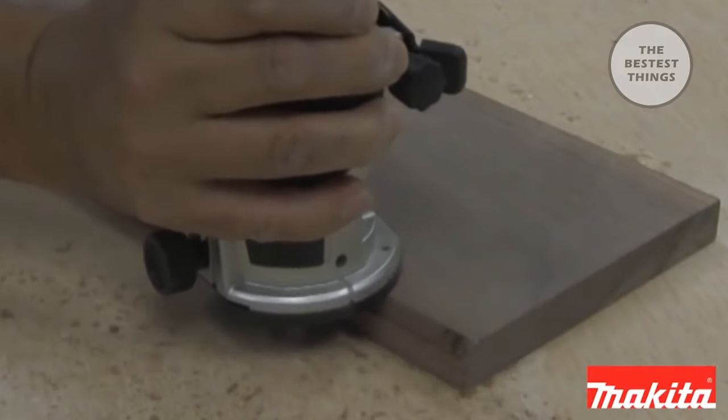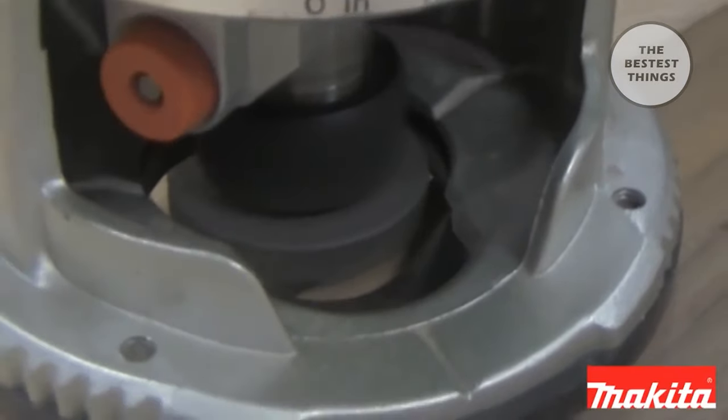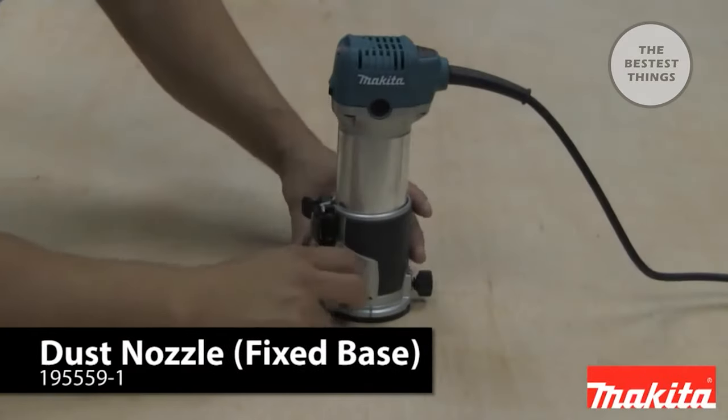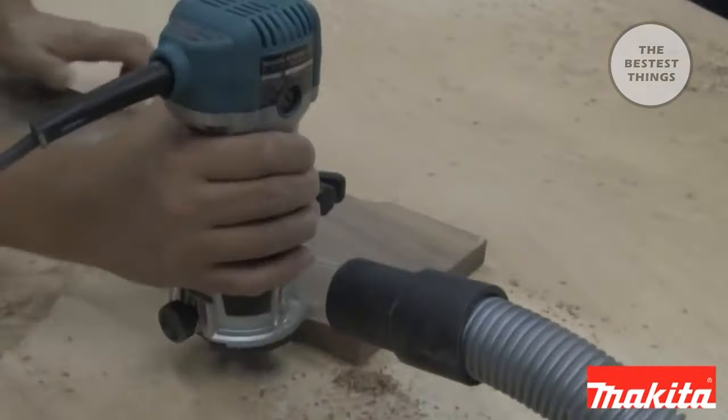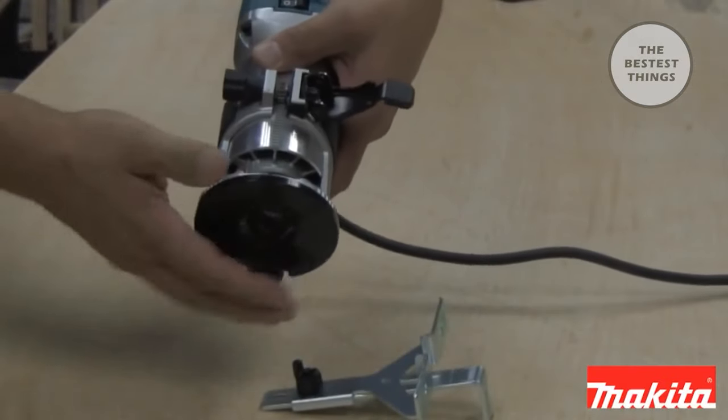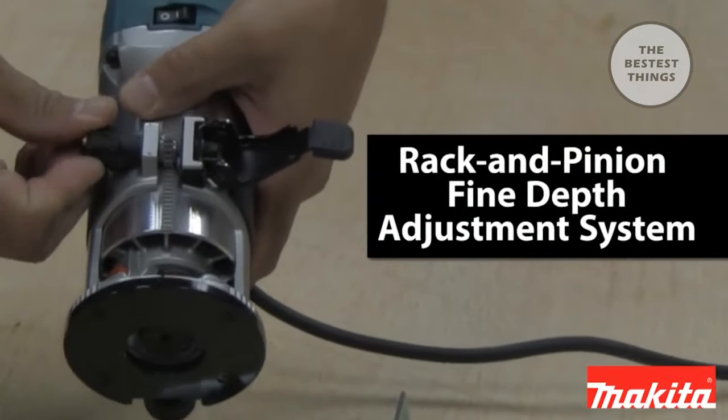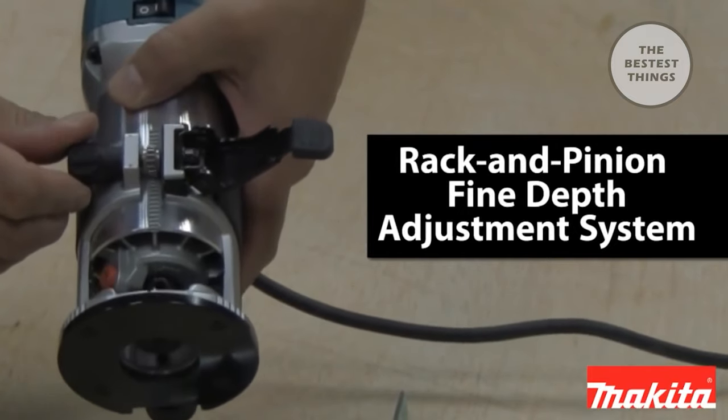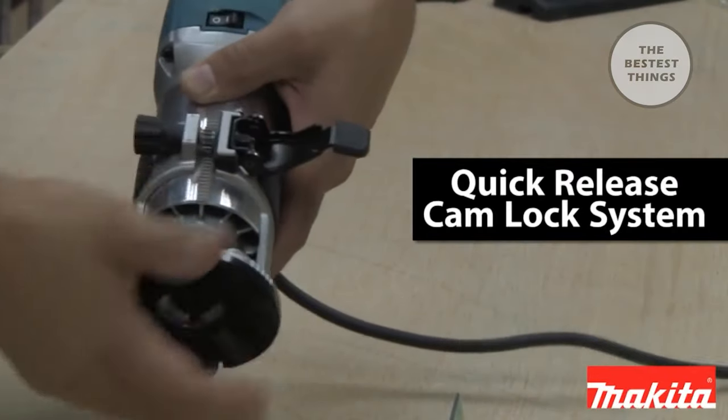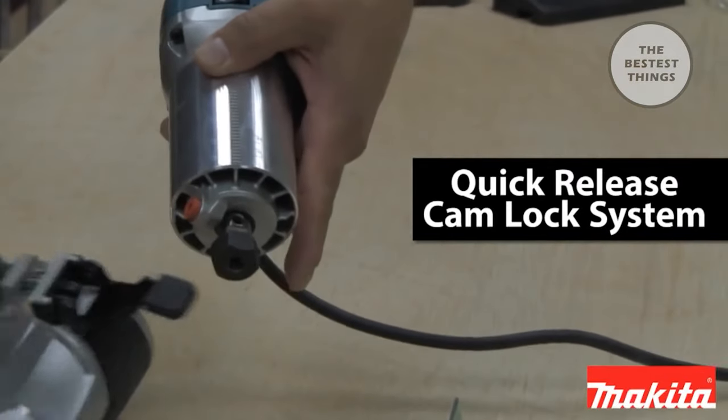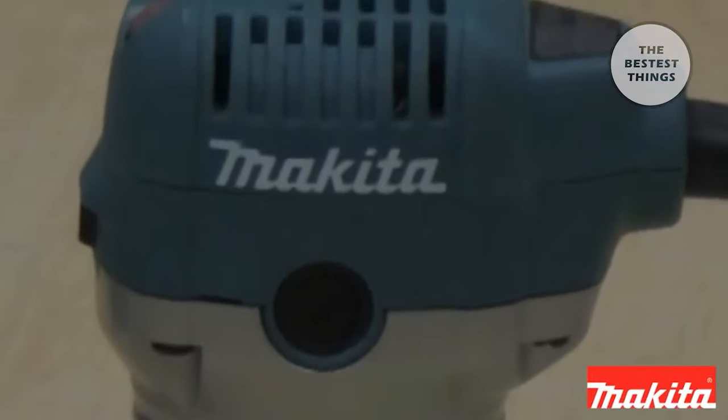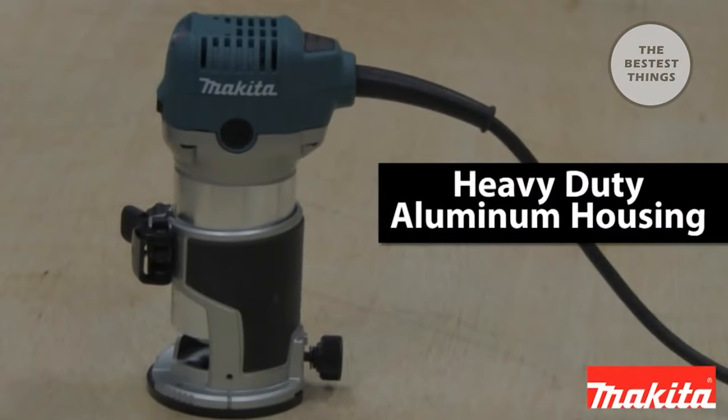The router is also ideal for trimming edges on laminates and wood materials. The fixed base takes an optional dust port for improved dust collection. Some of the features on the router include smooth rack and pinion depth adjustment system for more precise settings. Quick release cam lock system for easy depth adjustments and base removal or installation. And a heavy duty aluminum housing engineered for increased durability.